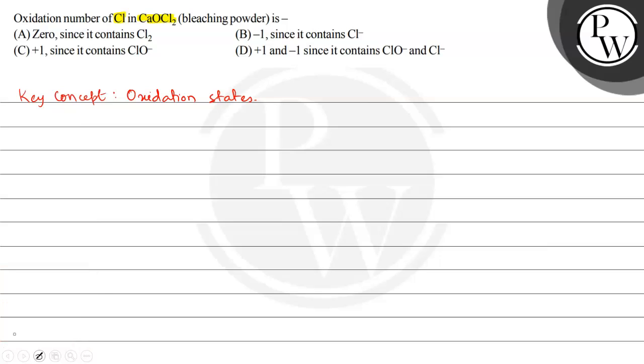Here a compound is given, that is CaOCl2, calcium oxychloride. Calcium oxychloride when ionized forms three types of ions: Ca2+ plus Cl- plus OCl-.